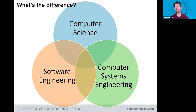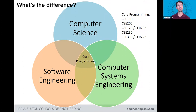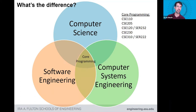What's the difference between some of these? Computer Science and Software Engineering sound really similar, and so does Computer Systems Engineering. In our school, they all focus on a set of core programming classes: CSE 110 is Intro Programming, 205 is Java with Data Structures, 230 is Computer Architecture, 310 is Data Structures. There are a few variants in the Software Engineering program taught out of Poly with different course numbers, but it's basically the same content. All three of these majors really build on this core programming experience.